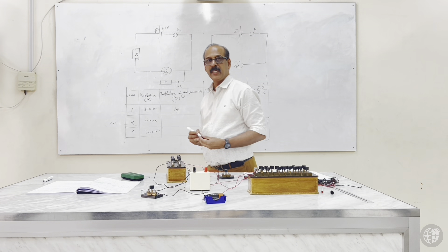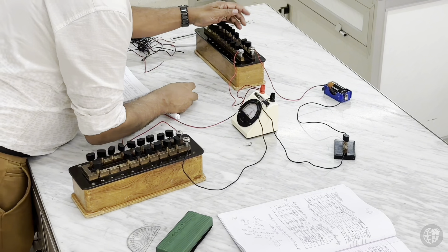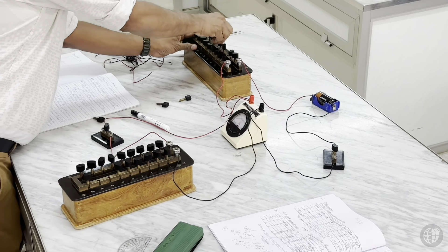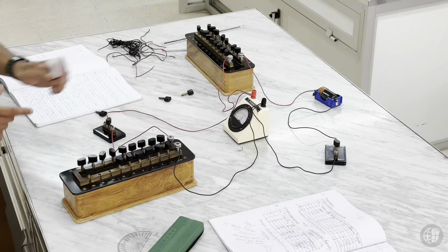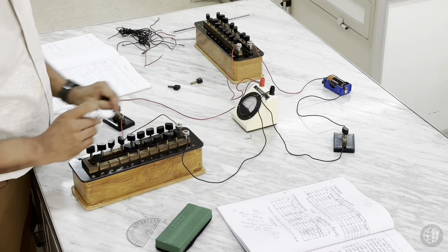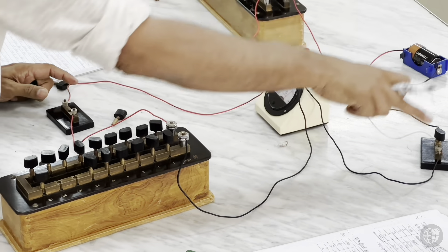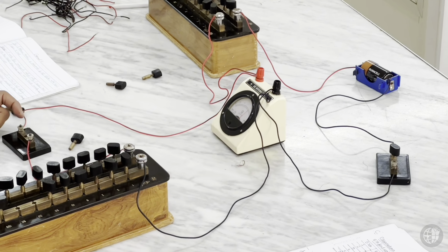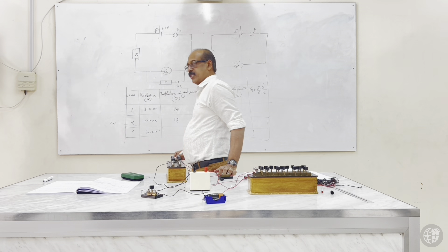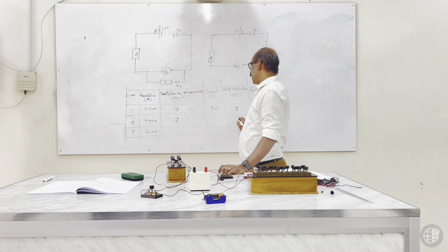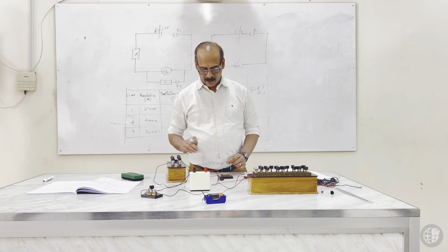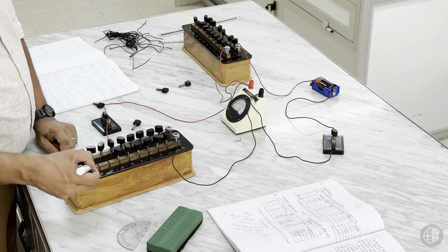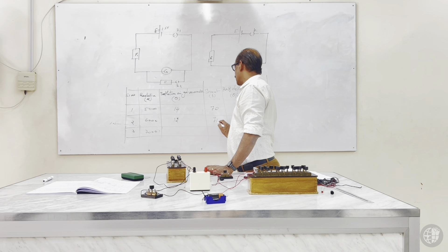Repeat the experiment with 6000 ohms in the main resistance (5000 plus 1000). Open K2 — deflection is about 12. We need 6 for half-deflection. Close K2 and adjust shunt — again approximately 70 ohms gives half-deflection. Record these values. Repeat with 7000 ohms (5000 plus 2000). Deflection is 10; half is 5. Close K2, adjust shunt to bring deflection to 5.